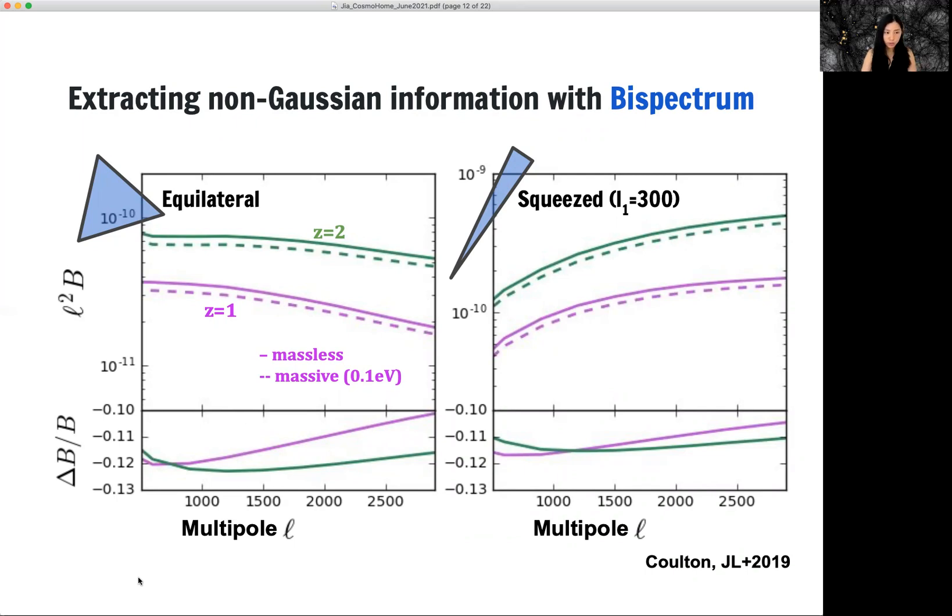and then ask how likely do we find overdensity at those places. So you have triangles of different shapes. They carry different information. Here I'm showing you two examples.